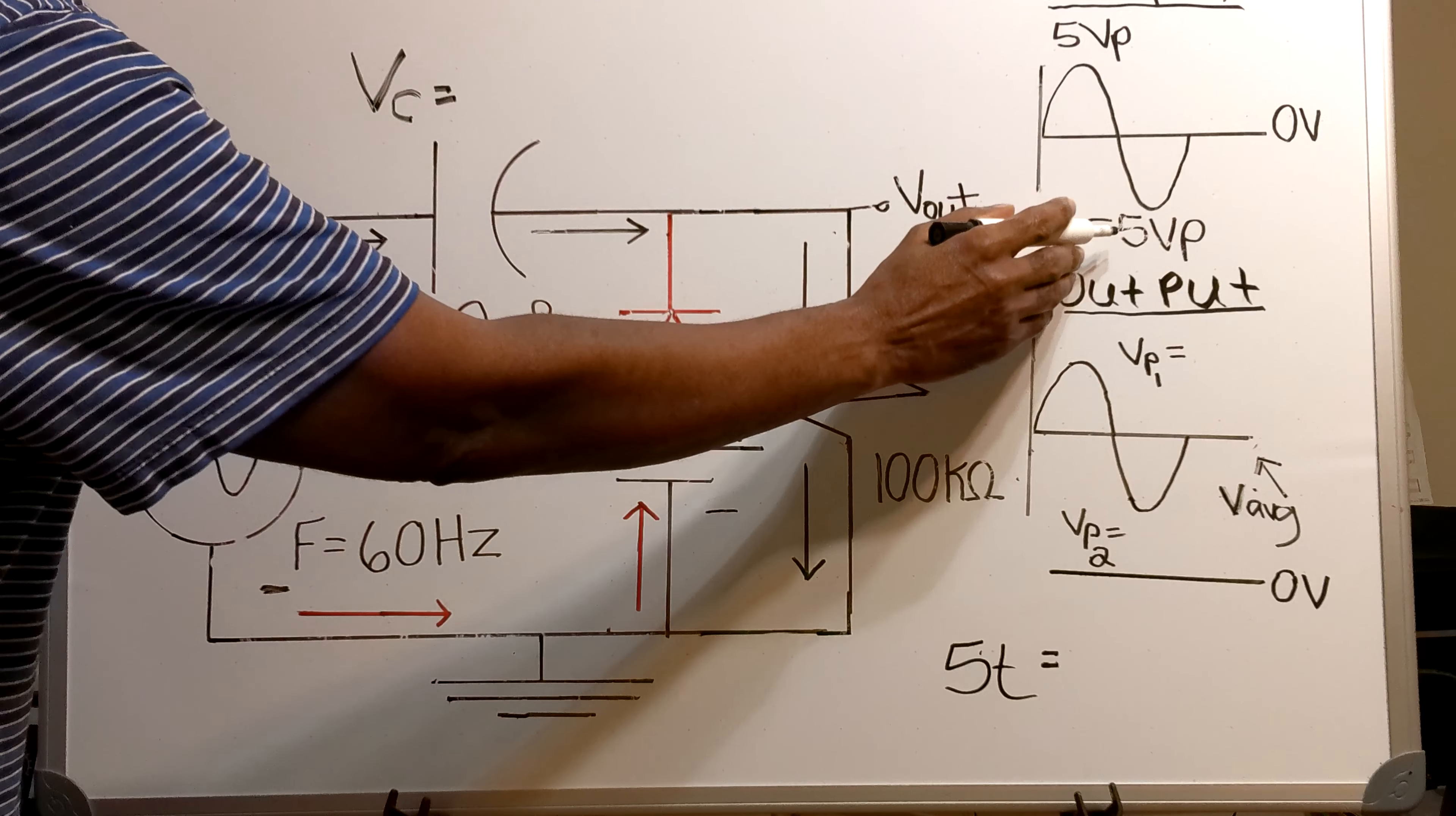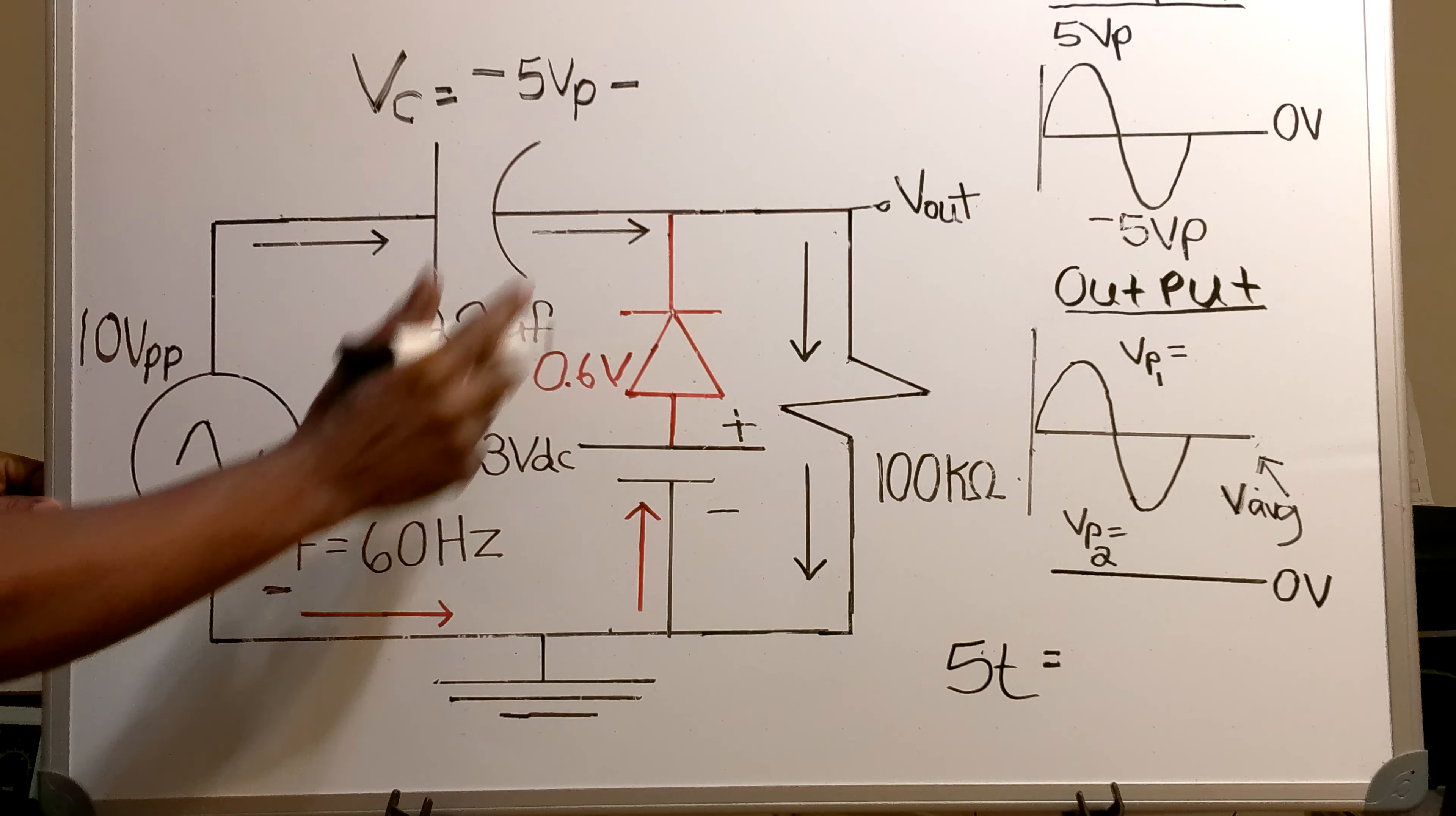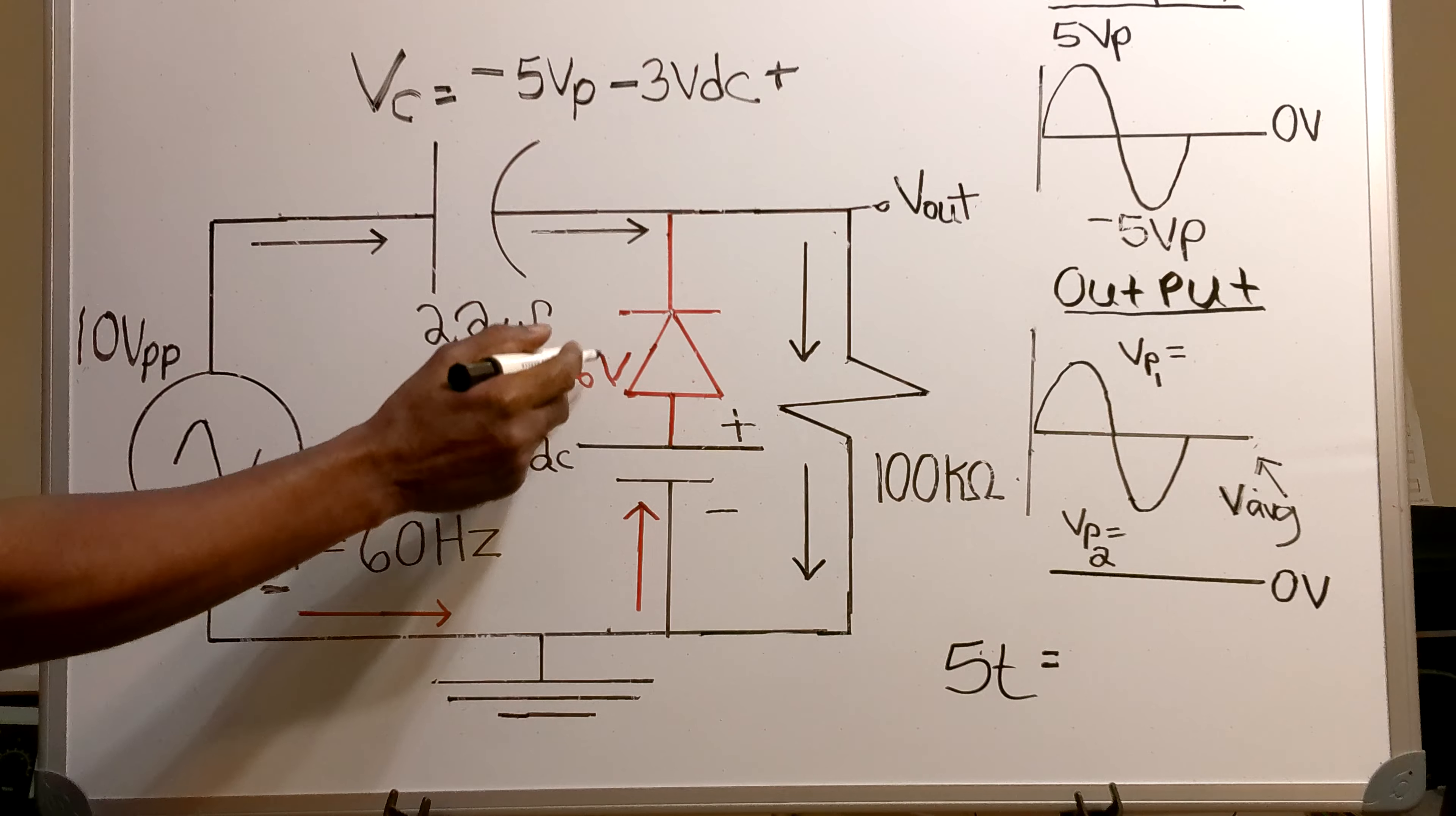Now it's the negative half cycle that is initially charging up the capacitor. It's a negative 5 volt peak, negative 5 volt peak, minus 3 volts DC.